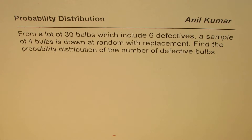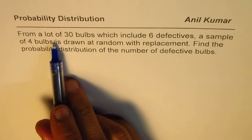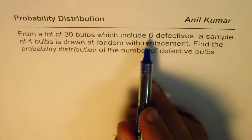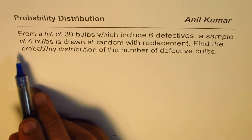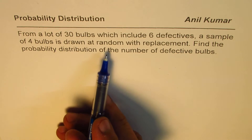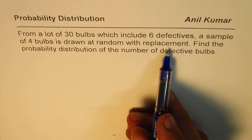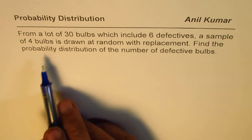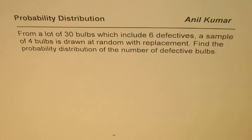I am Anil Kumar and here is an example on probability distribution. The question is: from a lot of 30 bulbs which include 6 defectives, a sample of 4 bulbs is drawn at random with replacement. Find the probability distribution of the number of defective bulbs.